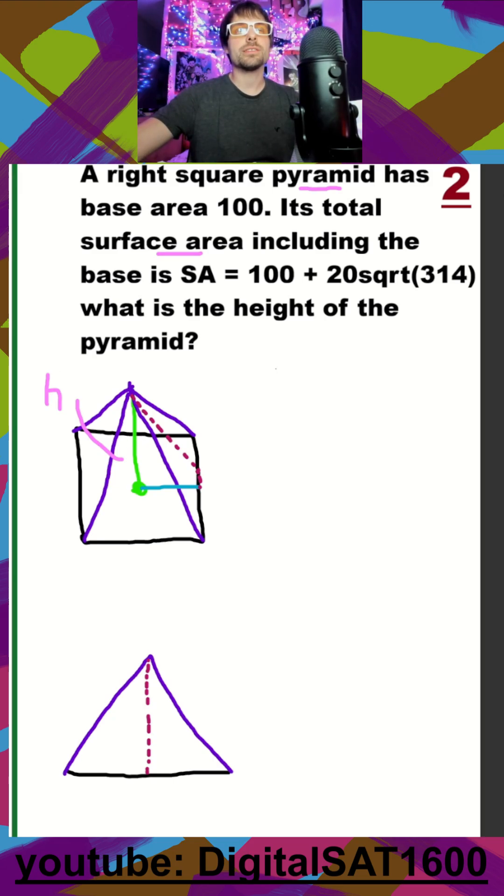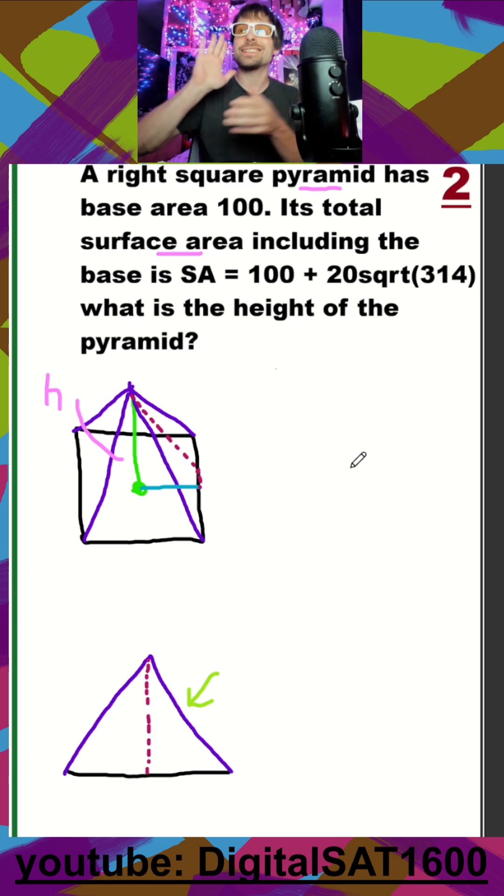What we can do is, in order to solve for the area of one of these faces, we need to get the slant height. So not our green height as shown here, but this slant height that's drawn here. Because if we can get that, we can get the area of one of our triangular faces and then multiply that by four.